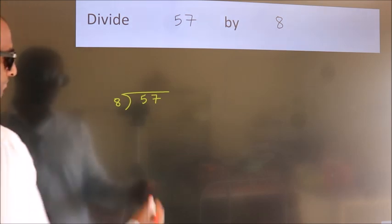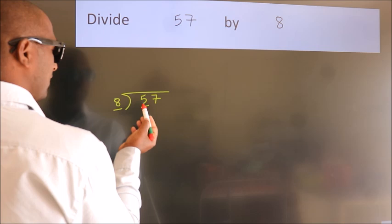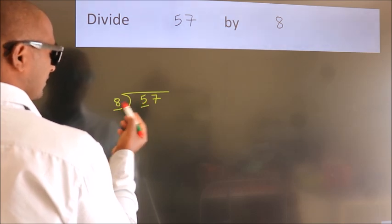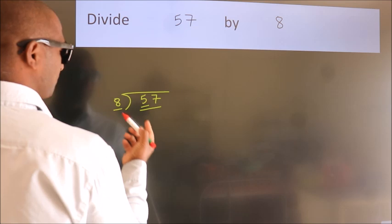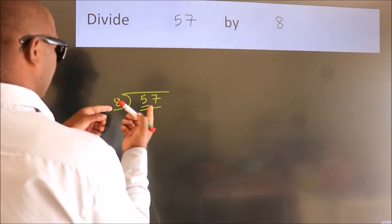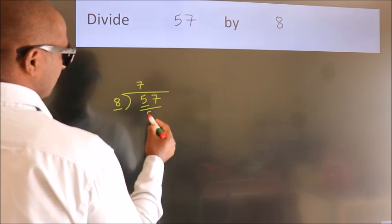Next, here we have 5, here 8. 5 smaller than 8. So we should take two numbers, 57. A number close to 57 in 8 table is 8 times 7 equals 56.